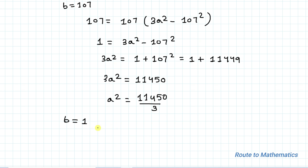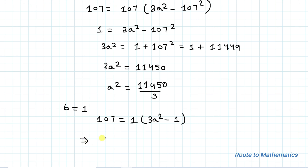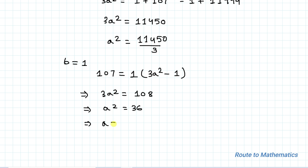Now applying b equals 1 in equation 2: 107 equals 1 times 3a squared minus 1, which gives 3a squared equals 108, so a squared equals 36, meaning a equals plus or minus 6. Since a is a positive integer, we take a equals 6.